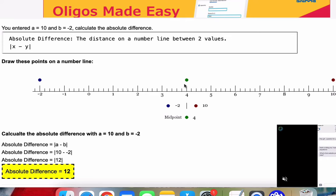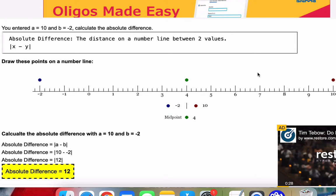And first, we want to walk through the definition. So the definition of absolute difference is the distance on a number line between two values.